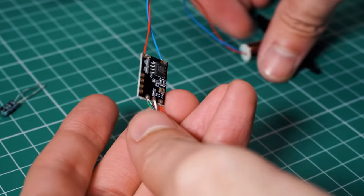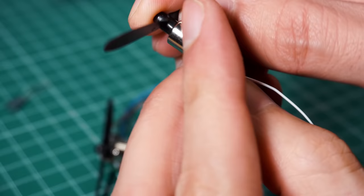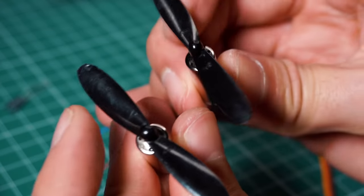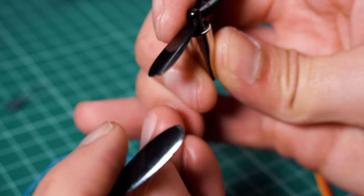So now let's do the connections of the motors to the electronic speed controller. Remember that we're going to use two motors. It is recommended that the motors rotate in opposite directions and that way they balance themselves. So make sure to use the right propellers.